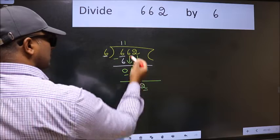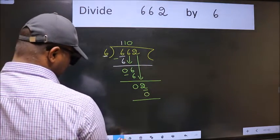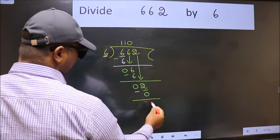So what we do is we take 0. So 6 into 0, 0. Now we subtract. We get 2.